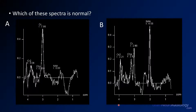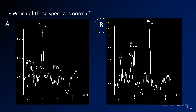Here we have two MR spectra — tell me which one is normal. Clearly B is the normal spectrum. The three peaks you're most concerned about are choline, creatine, and NAA. Choline is a marker of cell turnover; creatine is an energy metabolite serving as a relatively normal baseline; and NAA is a marker of normal neurons. The markedly abnormal spectrum shows very little choline, almost no NAA, a creatine peak, and a lactate peak — an inverted peak around 1.3 ppm.